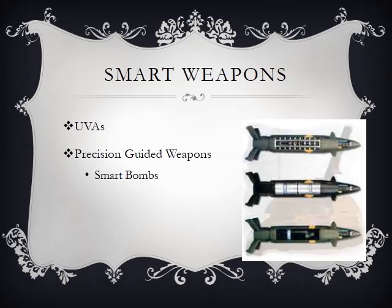Next we'll talk about smart weapons or unmanned aerial vehicles, also known as UAVs or drones. The most common drones are called the Predator and Reaper. They are equipped with weapon systems to provide air support for friendly forces and infrared cameras to see through dust. They are remotely controlled by pilots who could be thousands of kilometers away.